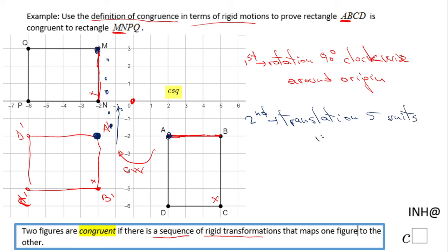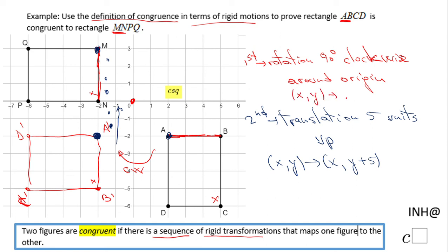In case you need the rules: the translation looks like (x, y) → (x, y + 5), and the rotation around the origin looks like (x, y) → (y, −x).